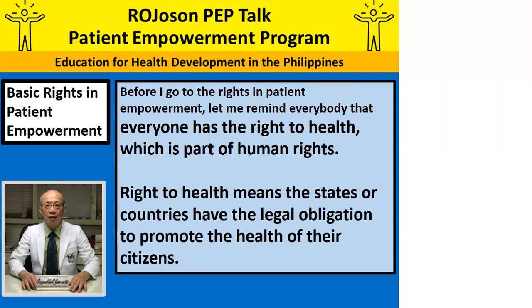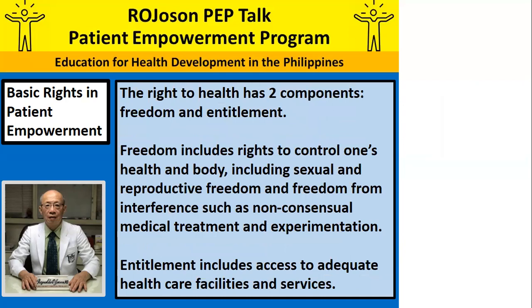Before I go to the rights in patient empowerment, let me remind everybody that everyone has the right to health. The right to health means that states or countries have the legal obligation to promote the health of their citizens. The right to health has two components — freedom and entitlement. Freedom includes the rights to control one's health and body, including sexual and reproductive freedom, and freedom from interference such as non-consensual medical treatment and experimentation.